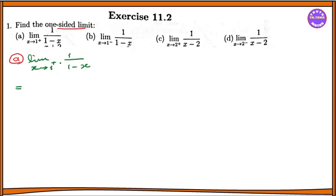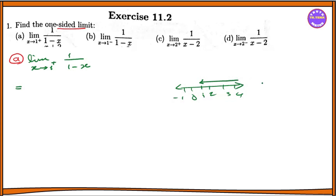We substitute values approaching from the right. The function gives an infinite limit. As x approaches 1 from the right, we check values: 2, 3, 4. So for part A, we get 1 minus 1, 1 minus 2 — giving us minus 1, minus 2. This evaluates toward minus infinity.